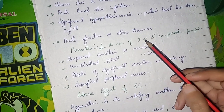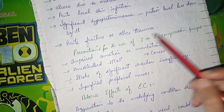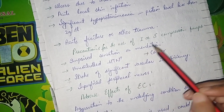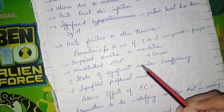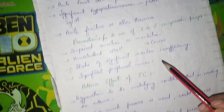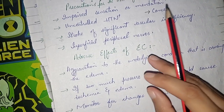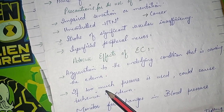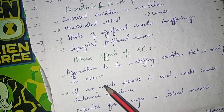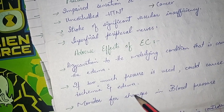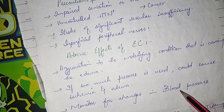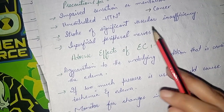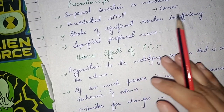Precautions to follow when applying compression bandages include: impaired sensation or mentation, uncontrolled hypertension, significant vascular insufficiency, cancer, and superficial peripheral nerves. Regarding adverse effects: if the bandage is applied too tightly, it can cause edema and ischemia — blood supply will not properly reach the region and beyond. Blood pressure should also be monitored during application.